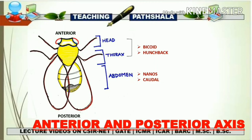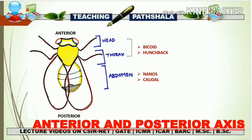This figure shows the location of head, thorax, and abdomen. The anterior portion results in head and thorax, and the posterior portion results in abdomen formation. The head and thorax express the maternal genes bicoid and hunchback — this is the anterior part of Drosophila. The posterior part includes the abdominal segment, formed with the expression of nanos and caudal. Due to expression of bicoid and hunchback, head and thorax develop; due to expression of nanos and caudal, the abdomen develops.